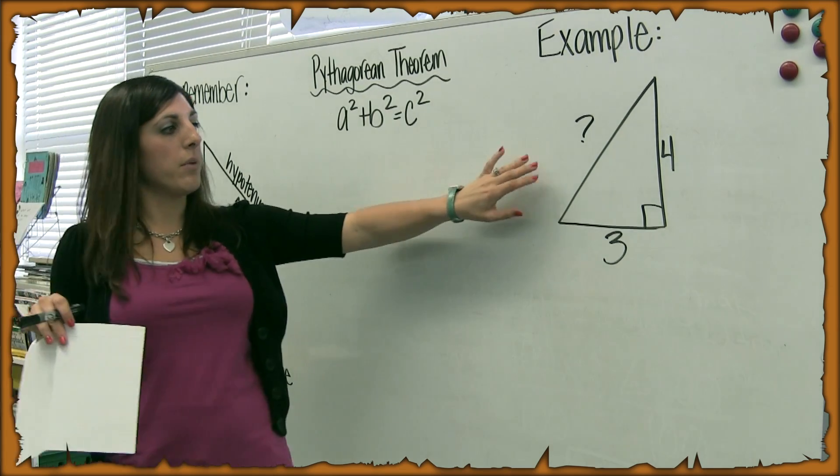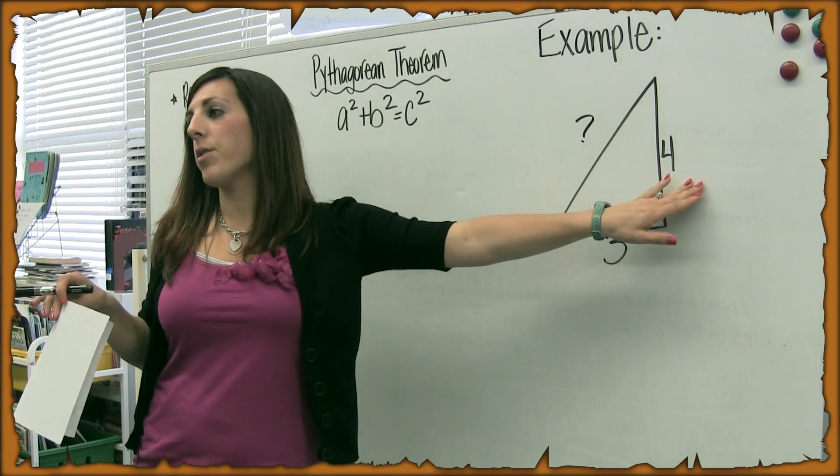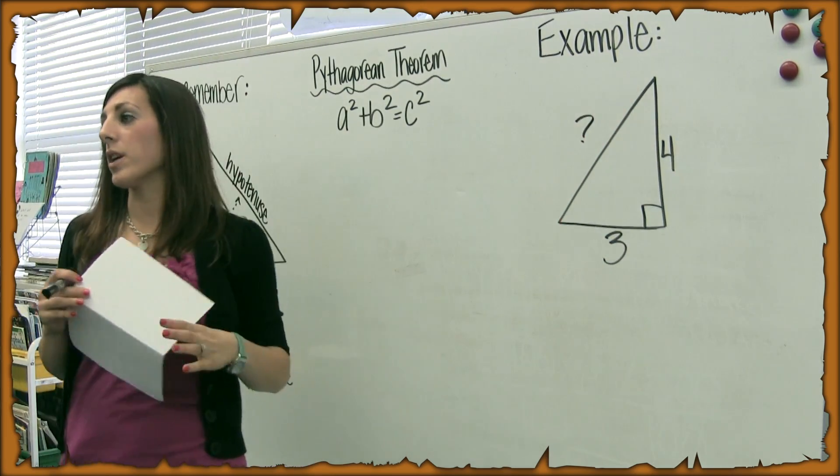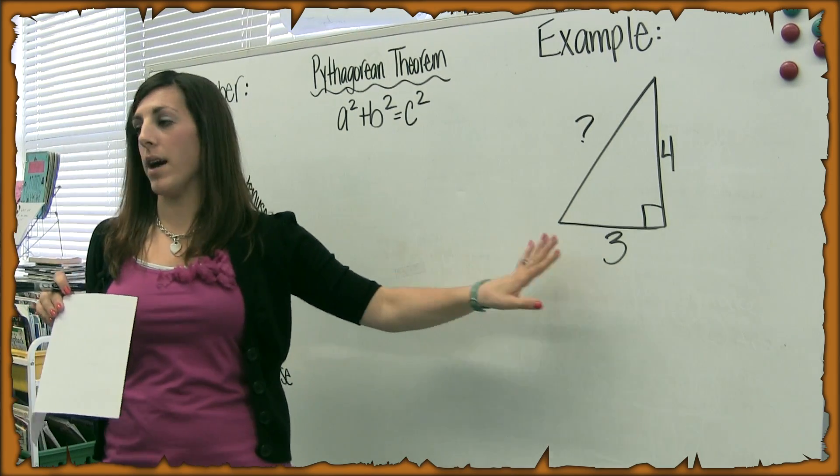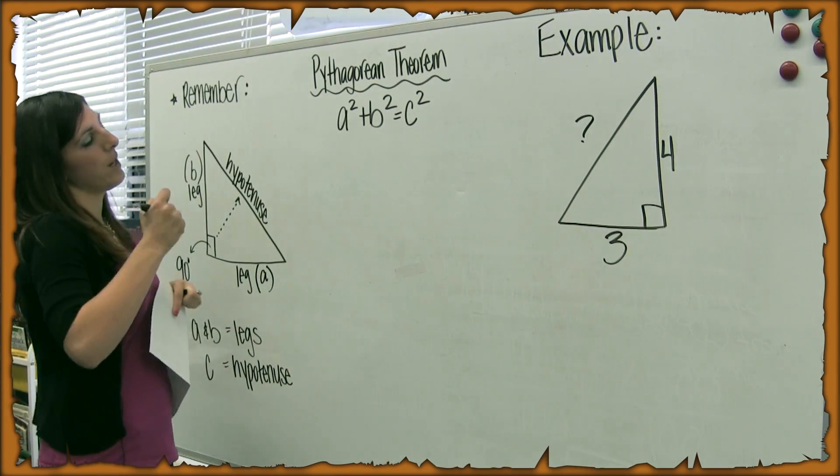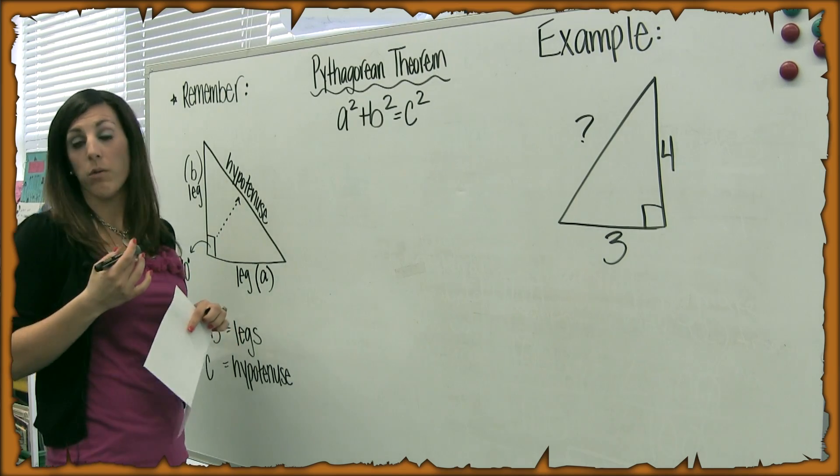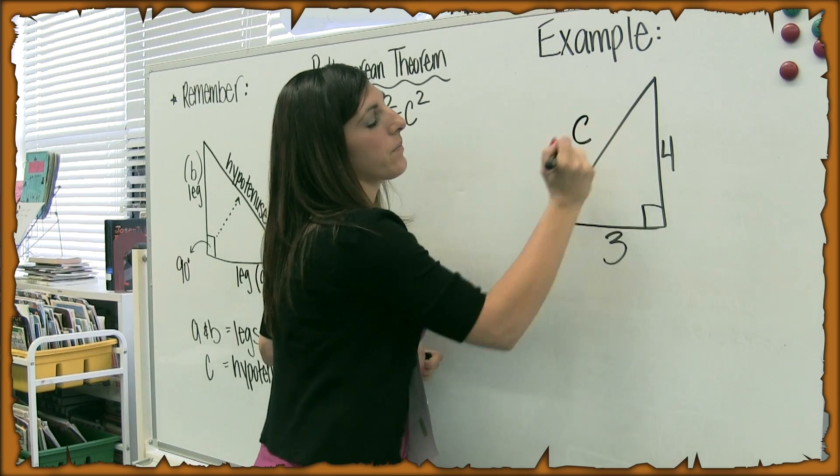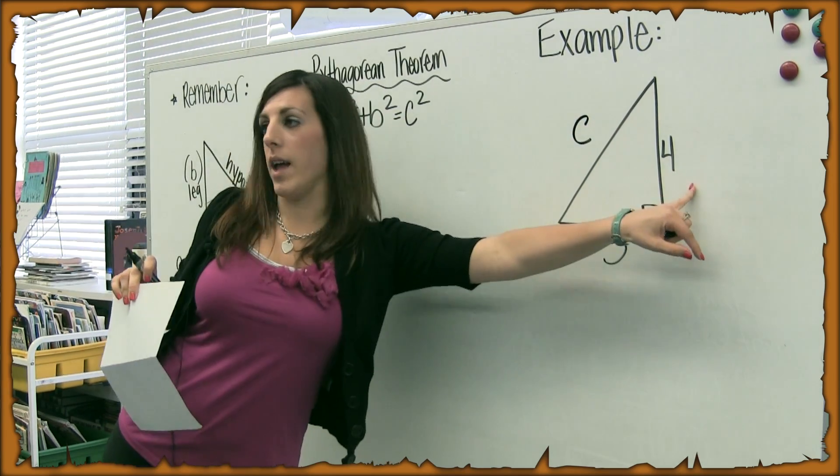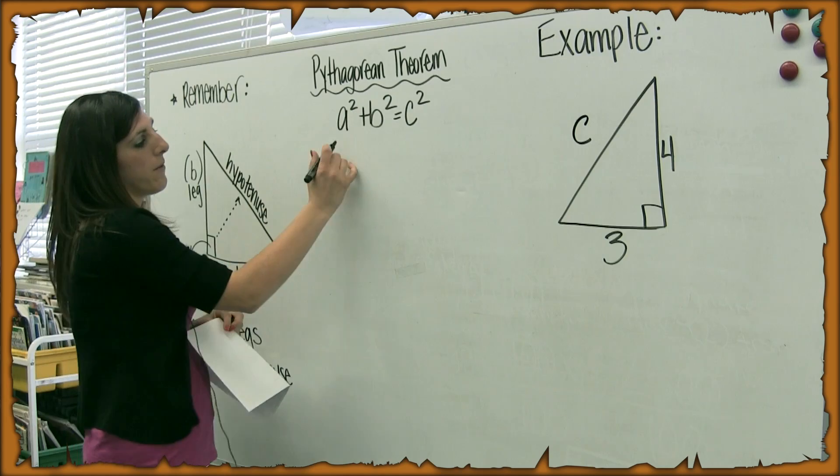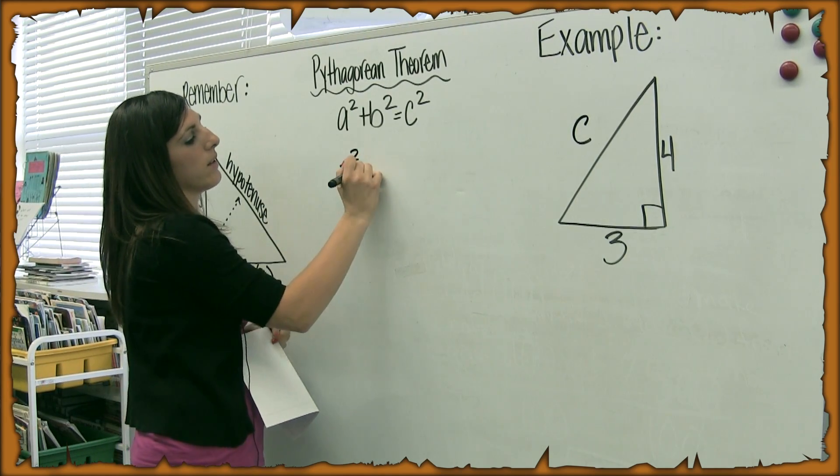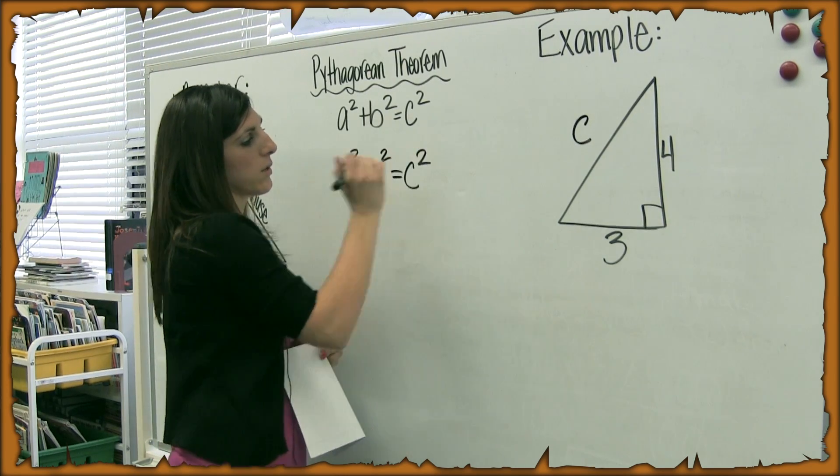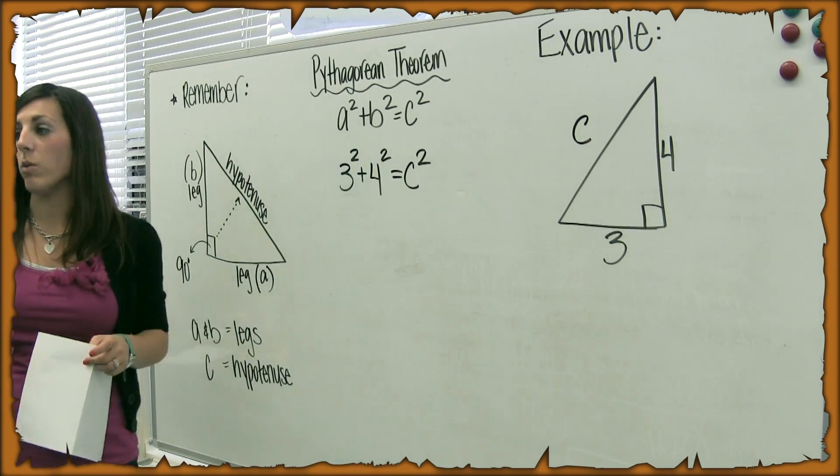So I have an example here where we know the two legs are 3 and 4, but we do not know the measurement of the hypotenuse. So we're going to use this theorem in order to find the length of the hypotenuse. I'm just going to write over here and I'm going to fill in what I know. Remember that this is C. The hypotenuse is always C. And the two legs are A and B. So we're going to use 3 for A, so 3 squared, and we're going to use 4 for B, 4 squared equals C squared. And we keep it as C because we don't know what it is.